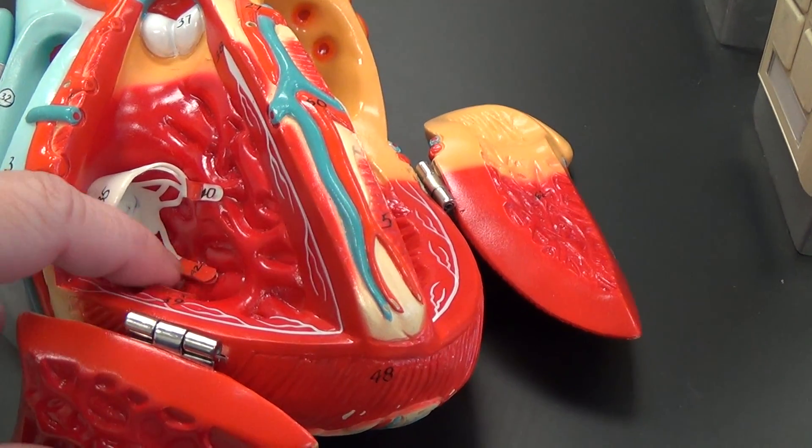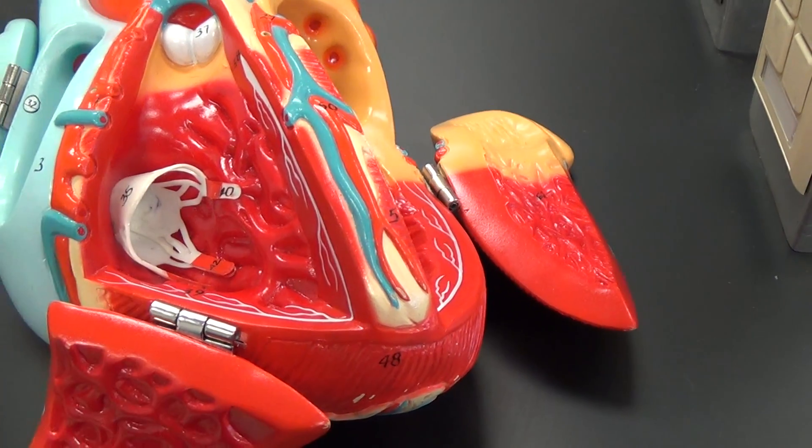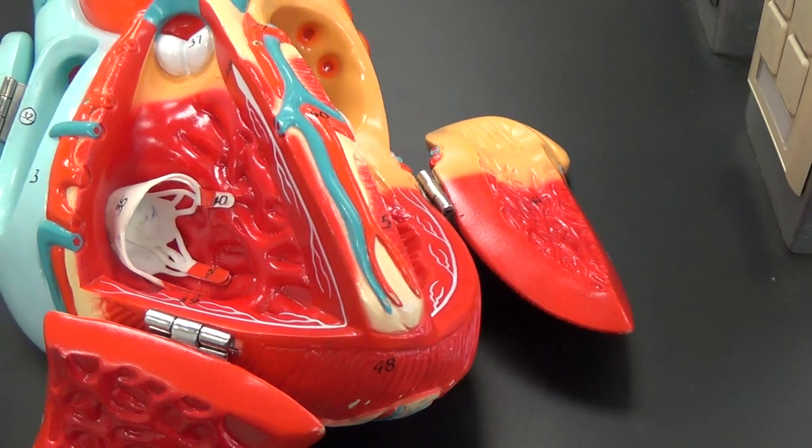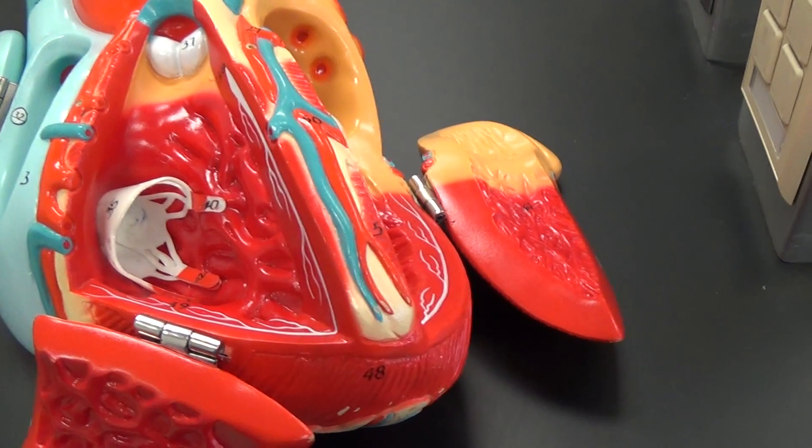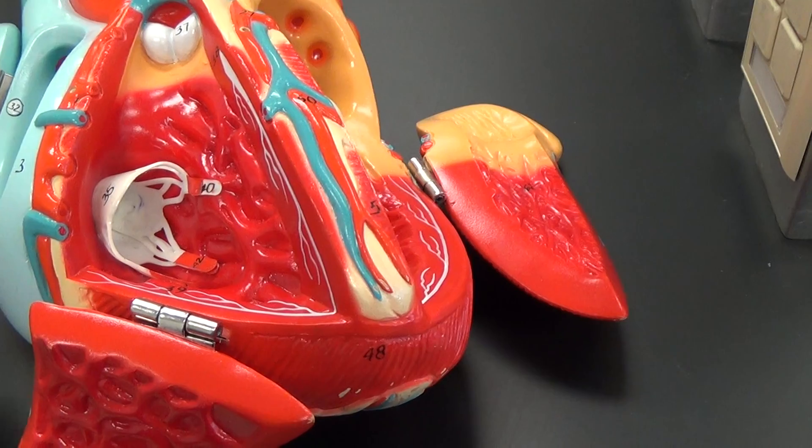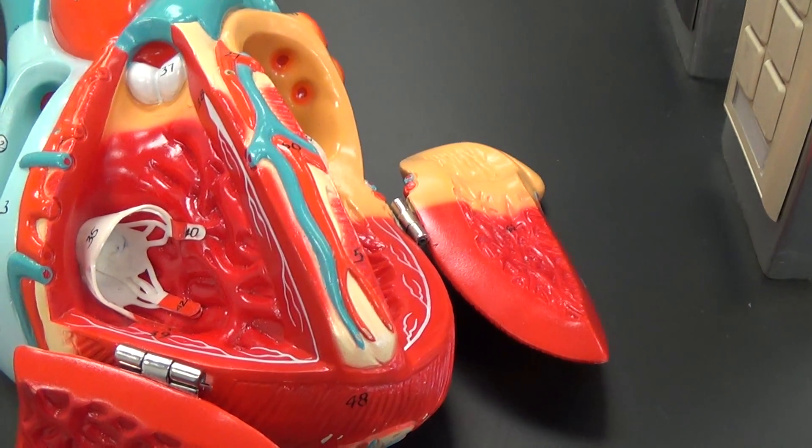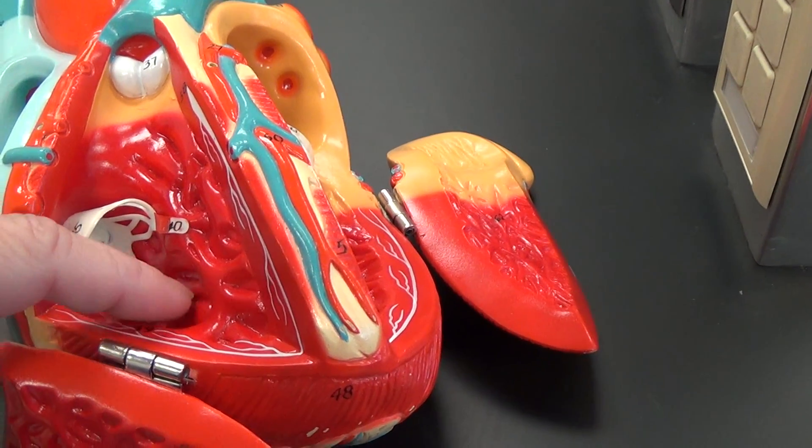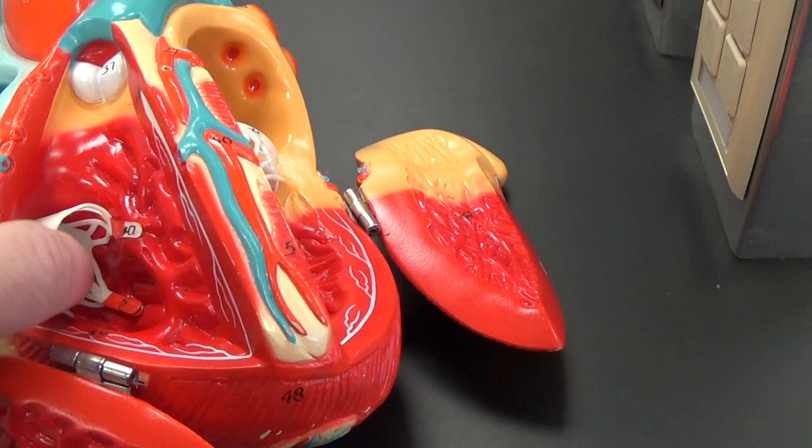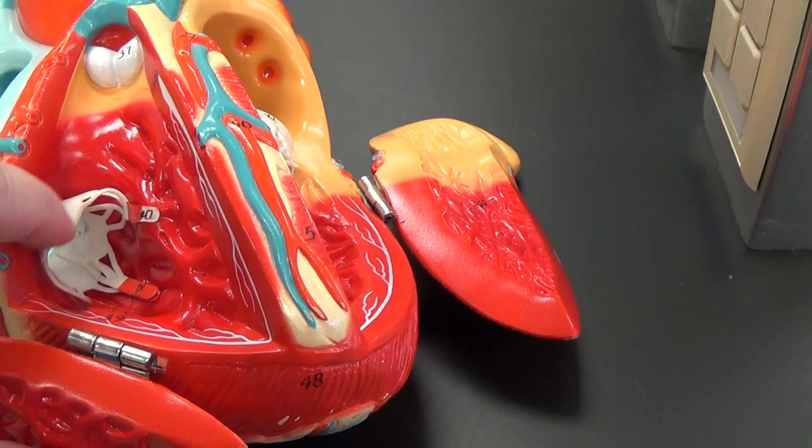These tendon-like structures that get pulled, closing the flap for the AV valves of the heart, the tricuspid and mitral bicuspid, these are called chordae tendineae. It's the actual flap-like structure that we see up here.